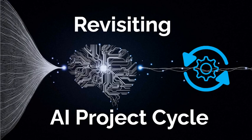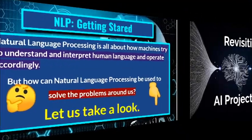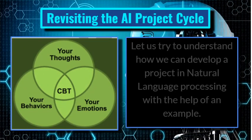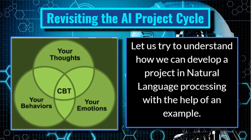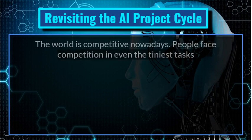For taking an example of one of the applications of natural language processing, we can start an AI project. We need to design an AI project, but with the process of designing we will revisit the AI project cycle. Let us try to understand how we can develop a project in natural language processing with the help of an example. I am taking the same scenario which is given in your book.